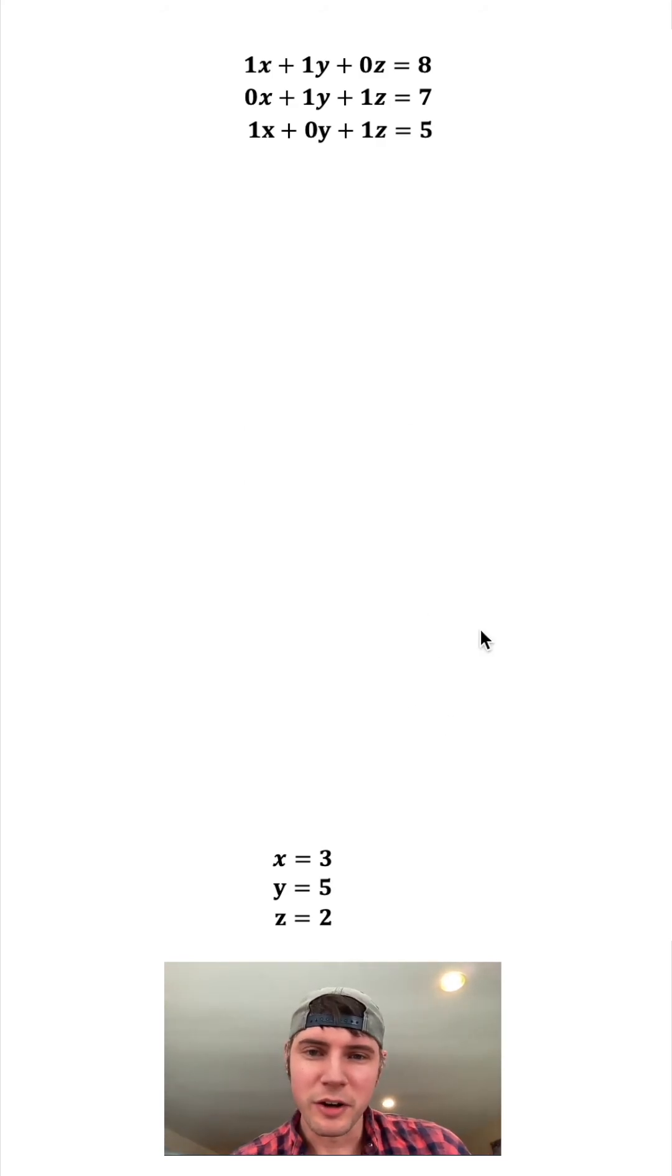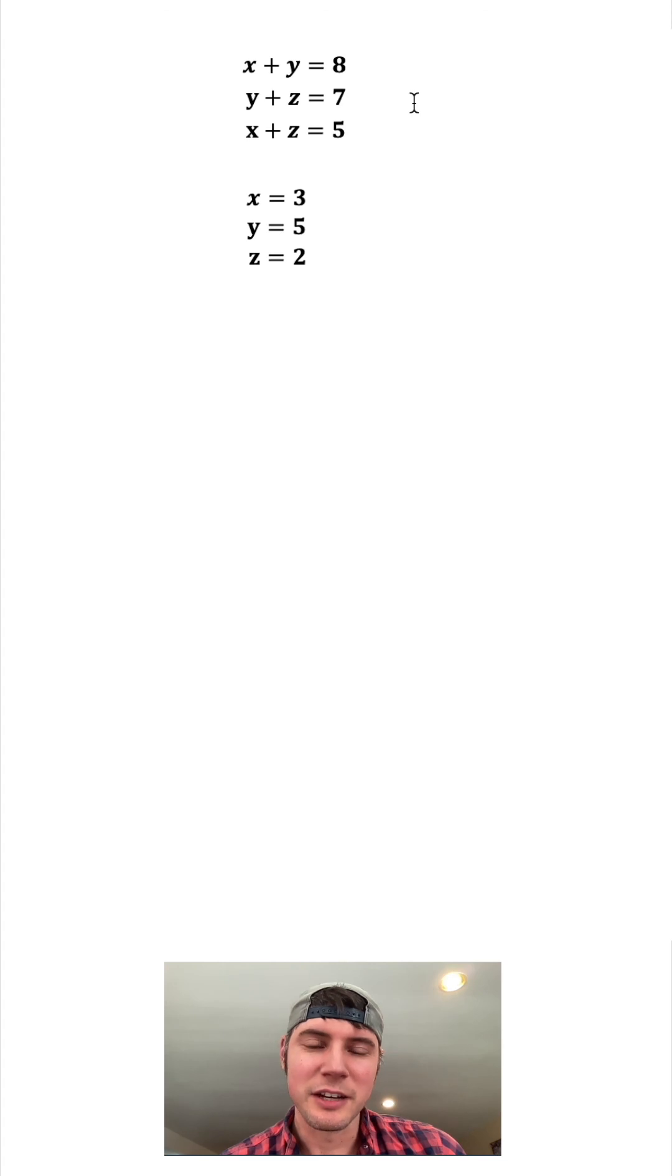We can check our work by rewriting this like it was originally. We'll plug in 3 for the x's, 5 for the y's, and 2 for the z's. We simplify it and we get true answers. So we just found out what x, y, and z need to be to make this true.